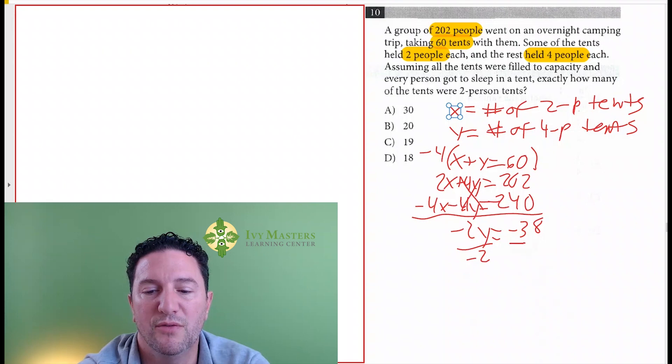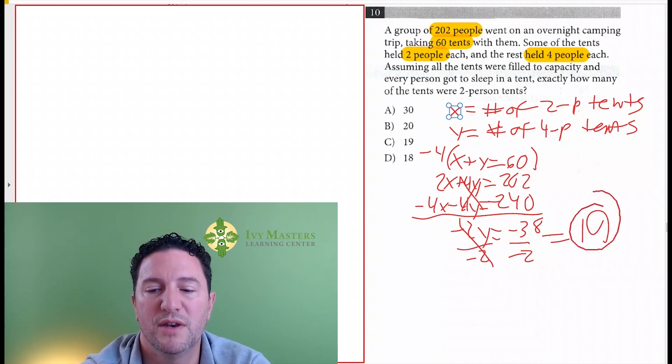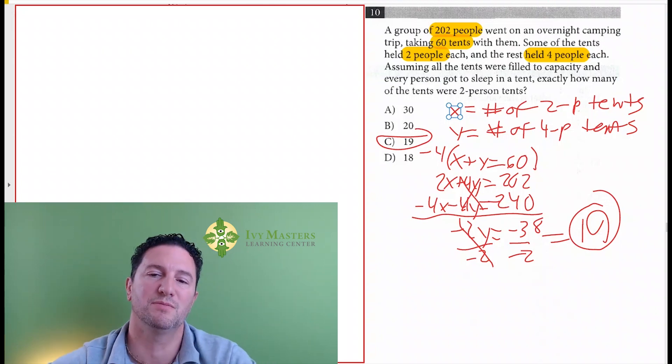When I divide both sides by negative 2, this cancels, and I get a positive 19. Once again, C is my answer.